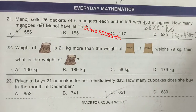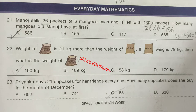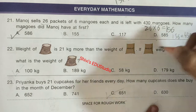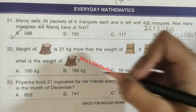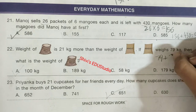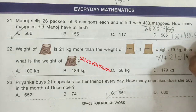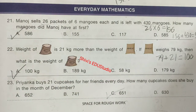Question number 22. The weight of rice is 21 kg more than the weight of wheat. If wheat weighs 79 kg, then what is the weight of rice? To find the weight of rice, we will do 79 plus 21, which is equal to 100. So the option 100 kg is the correct option.